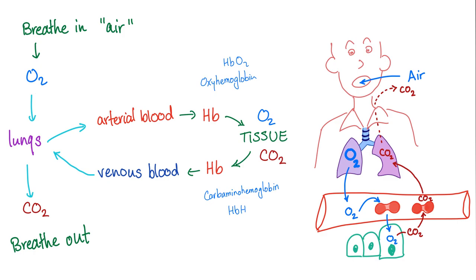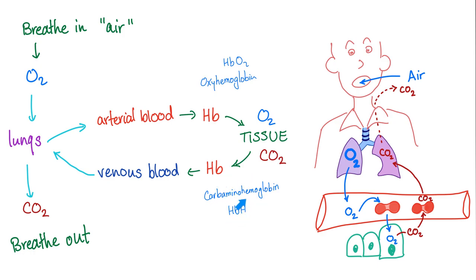You breathe air in, bringing oxygen to your body via your lungs. The oxygen jumps onto the arterial blood, and in the blood there are red blood cells, which have hemoglobin — the oxygen jumps onto the hemoglobin. Oxygen is given to the cells of your body, and the cells give you carbon dioxide. Venous blood is deoxygenated, with carbon dioxide, and it goes back to the lungs to be breathed out. When hemoglobin carries oxygen, it's called oxyhemoglobin. When it carries carbon dioxide, it's called carbaminohemoglobin. Do not say carboxyhemoglobin — that is toxic and refers to carbon monoxide poisoning (CO, not CO₂).